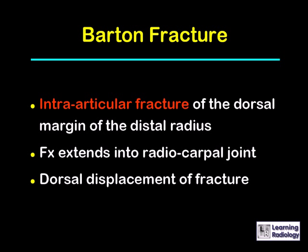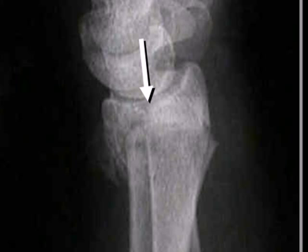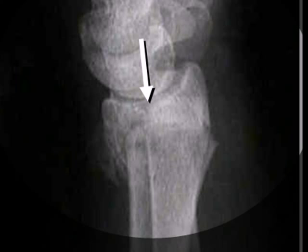A Barton fracture is an intra-articular fracture of the dorsal margin of the distal radius. The fracture extends into the radiocarpal joint, and there is usually dorsal displacement of the fracture. The white arrow is pointing to the intra-articular component of the fracture of the distal radius, with slight dorsal displacement.